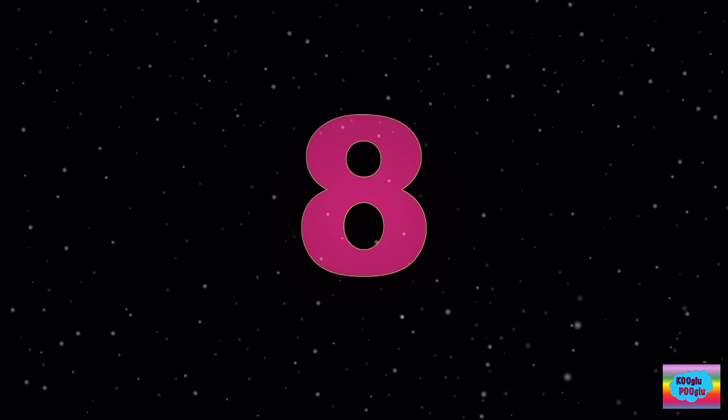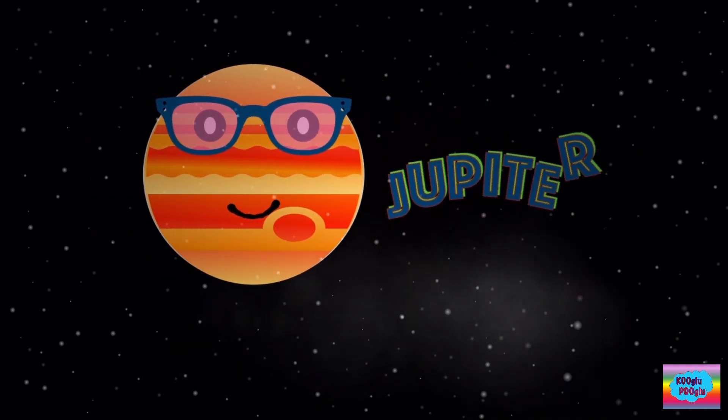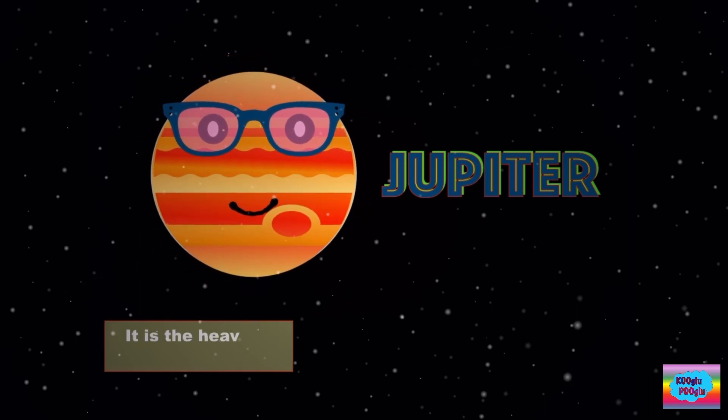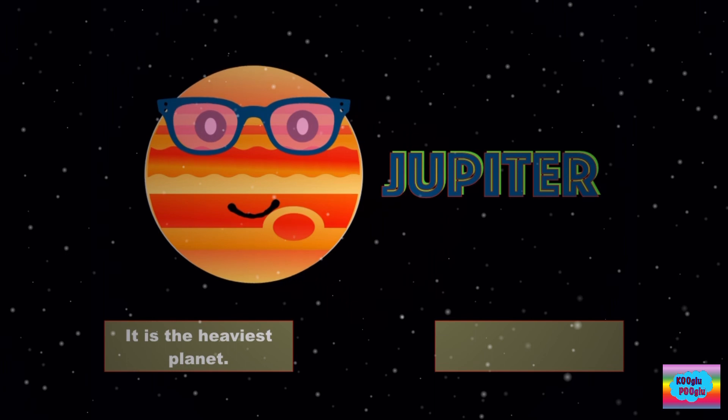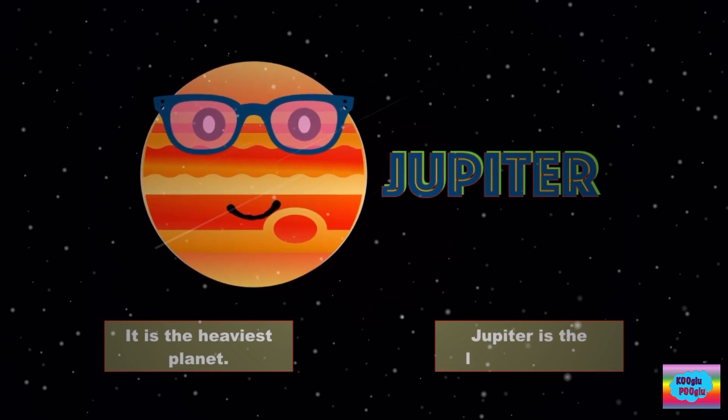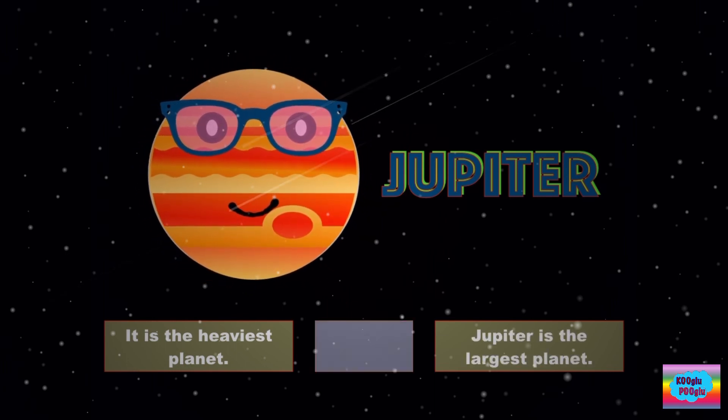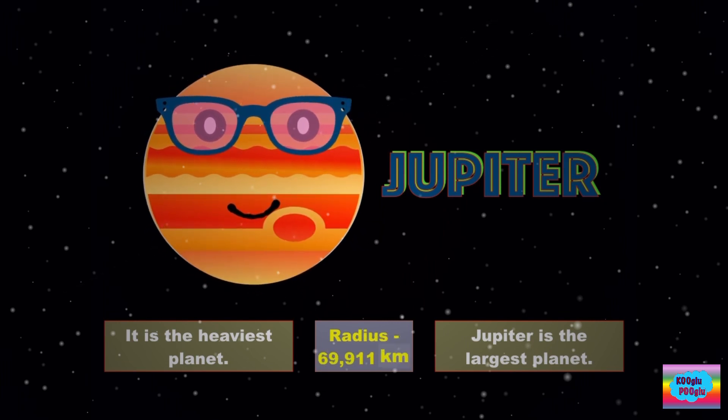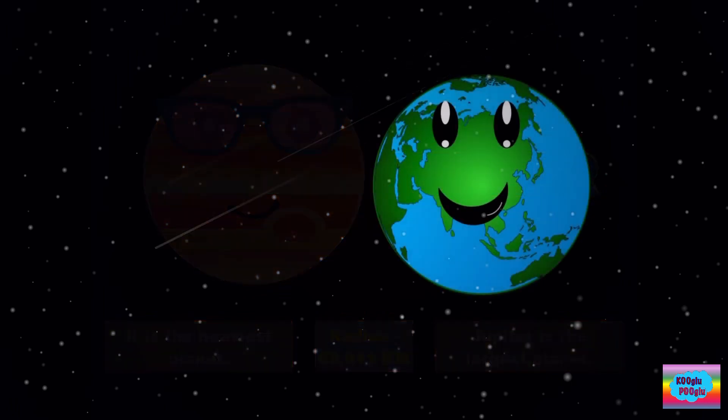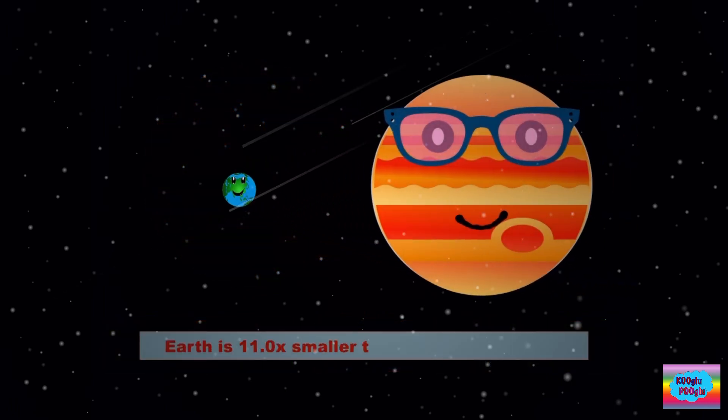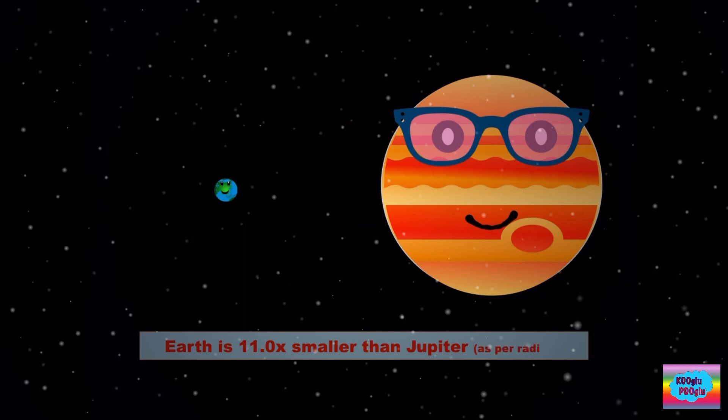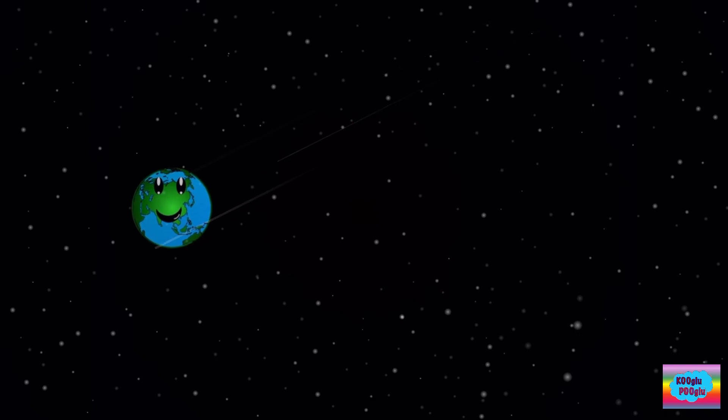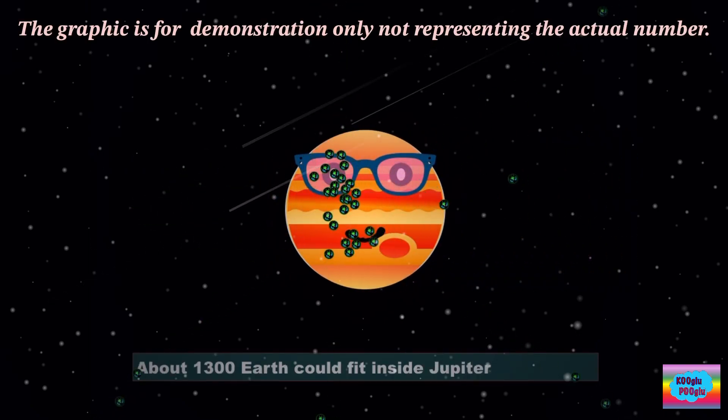Now we're on eight, Jupiter. It is the heaviest planet. I'm really heavy. Jupiter is the largest planet. I'm the big boy in school. Radius 69,911 kilometers. Earth is 11 times smaller than Jupiter. About 1300 Earths could fit inside Jupiter.